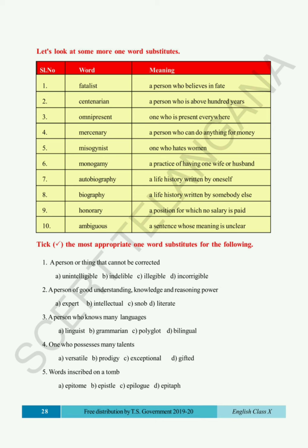Now the third one — 'omnipresent.' One who is present everywhere is called omnipresent. We say God is omnipresent, that means God is everywhere. Next is 'mercenary' — a person who can do anything for money is called mercenary. We can say 'he is mercenary,' that means he can do anything for money. Next is 'misogynist' — one who hates women. The one word substitute for a person who hates women is misogynist.